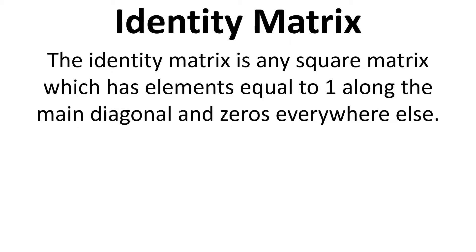The identity matrix then is a square matrix which has elements equal to 1 along the main diagonal and 0s everywhere else.